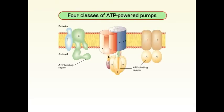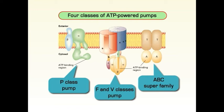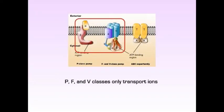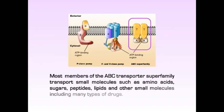There are four classes of ATP-powered pumps: P class, F class, V class, and the ABC superfamily, as shown in this diagram. Out of the four classes, P, F, and V classes only transport ions, while most members of the ABC transporter superfamily transport small molecules such as amino acids, sugars, peptides, lipids, and other small molecules including many types of drugs.